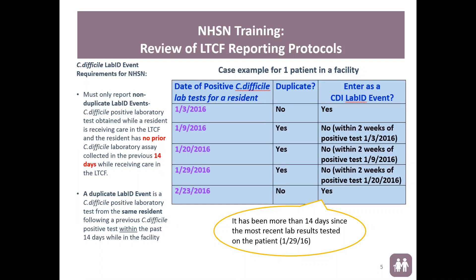Let's review the case example for one patient in a facility. The first date, 1-3-2016, is the initial test that was conducted and came back positive. This is not a duplicate because it is the initial test, so it can be reported into NHSN. The second test on 1-9 was within two weeks from the previous test, so it is considered a duplicate and is not reported. The 1-20-2016 test is also considered a duplicate because it has been less than 14 days since the 1-9-2016 test, so this will not be reported.